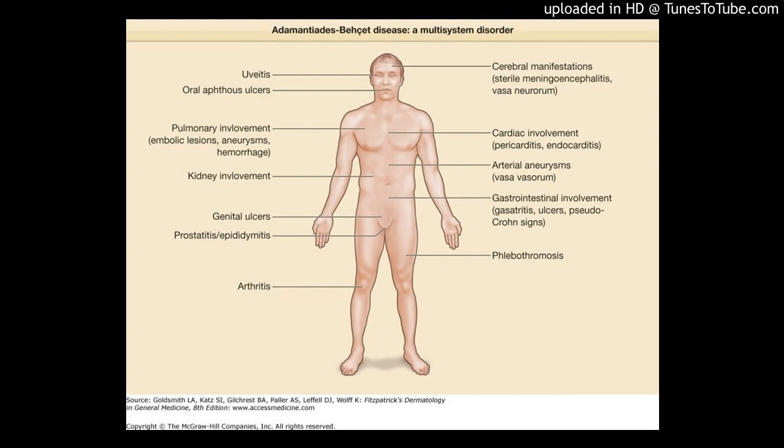Adamantiades-Behçet's Disease Diagnostic Guidelines. According to the International Study Group guidelines, for a patient to be diagnosed with Behçet's disease, the patient must have oral aphthous ulcers of any shape, size, or number at least three times in any 12-month period.